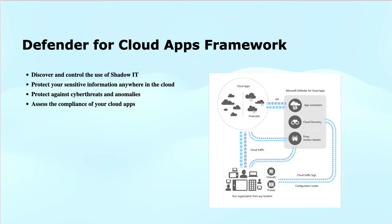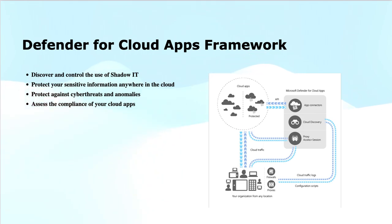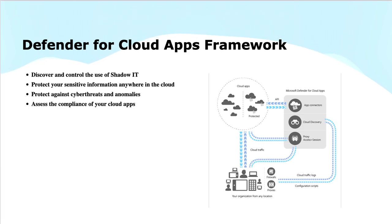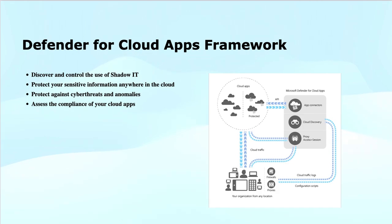How does it work? First, it helps with discovery — it helps you see all the cloud applications your organization is using, including those not officially approved, referred to as shadow IT. Next is protection: it lets you set security policies to protect your data, like preventing users from downloading sensitive files or sharing them with external parties. It also performs risk assessment, identifying risky activities like unusual sign-ins or actions that could indicate a security breach. Finally, compliance helps you stay compliant with regulations by monitoring cloud applications for any issues that could lead to violations.